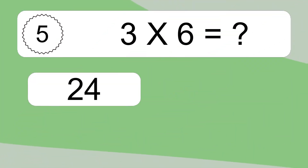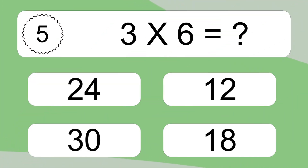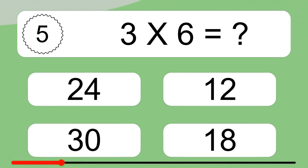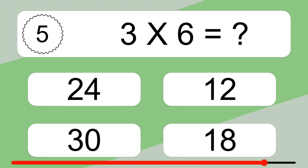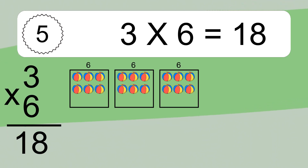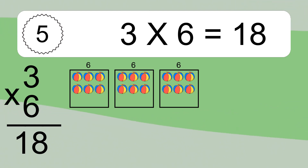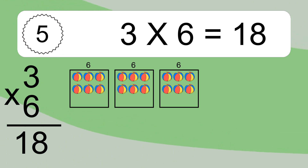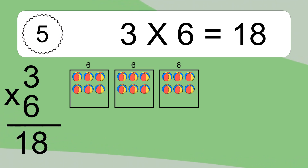3 times 6 equals what? 3 times 6 equals 18. We have 3 boxes, and each box has 6 colorful balls inside. If you count all the balls in all the boxes together, you will have 3 times 6 balls. This equals 18 balls.